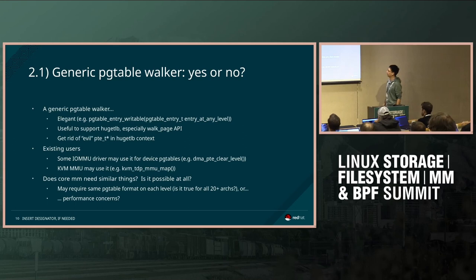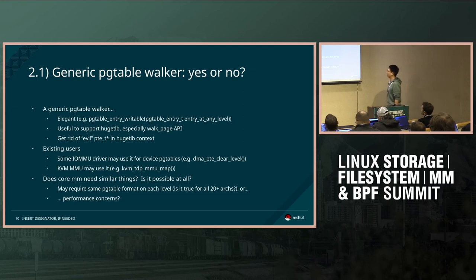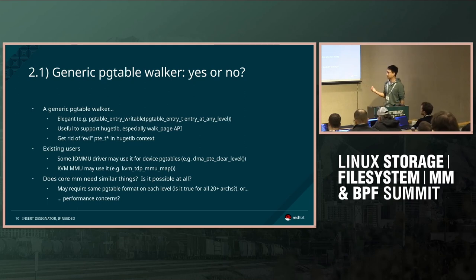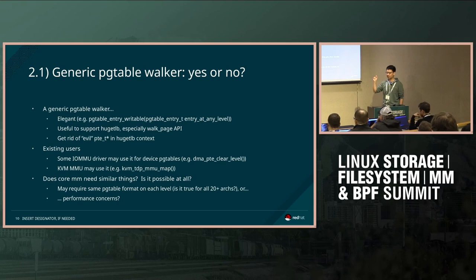The next topic is the generic page table API. The page walker did something I discussed with Jason, and we seem to agree we can do it in two steps. We could have some generic walker — something that can apply to any level. The major challenge is that we may require helper work for all the levels, meaning, for example, that the write bit is on the same index at every level. Otherwise we'd have more branches.